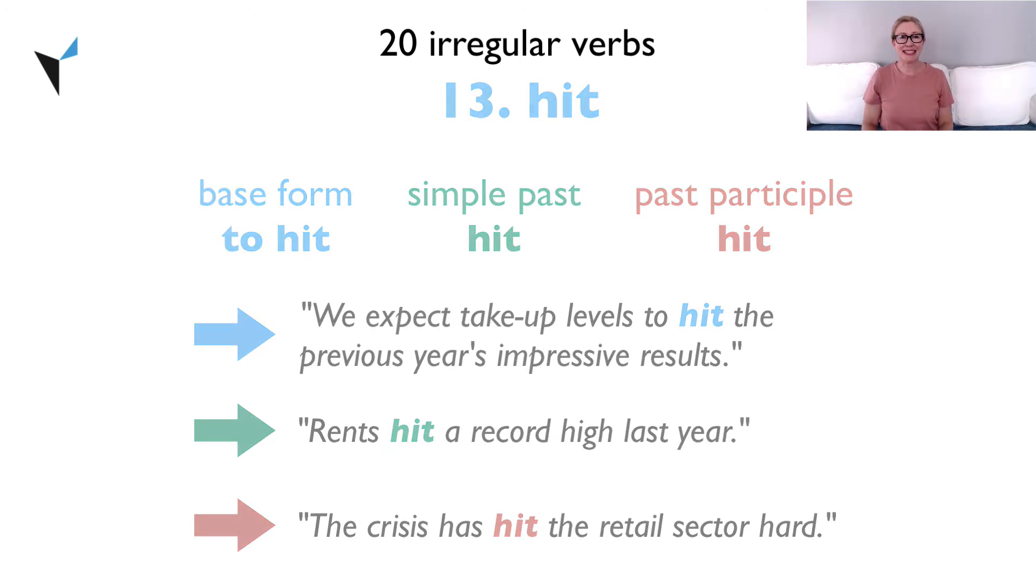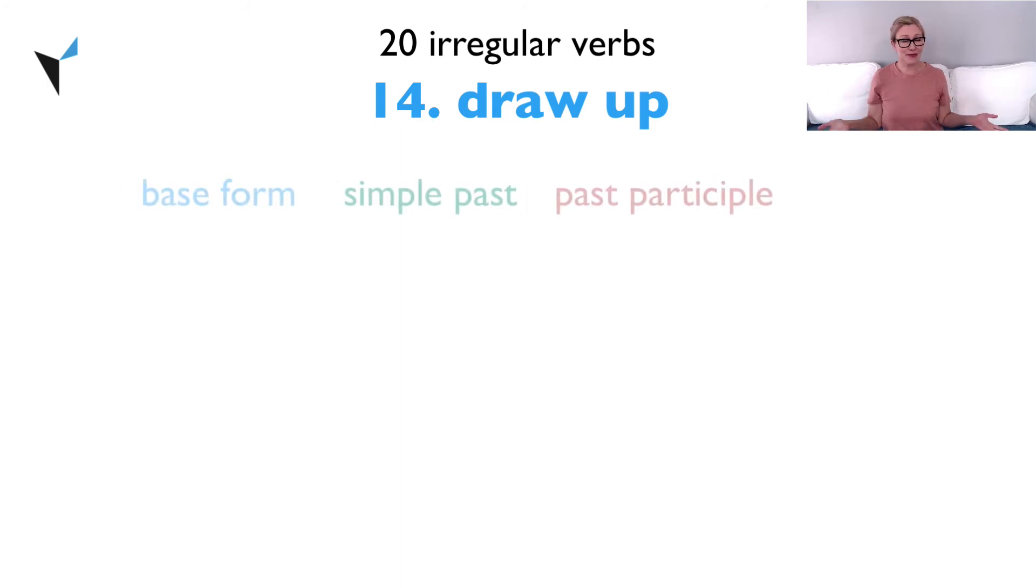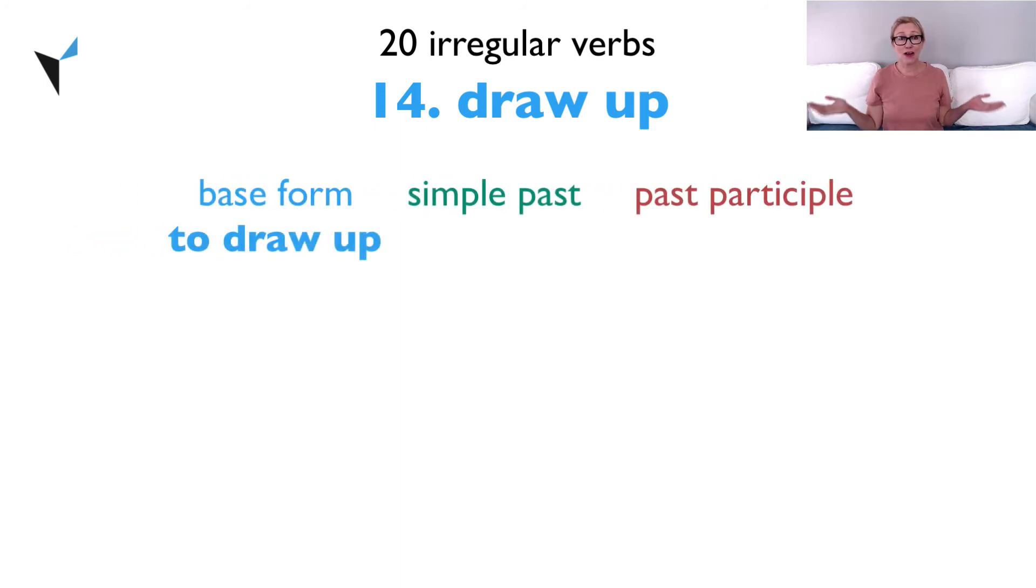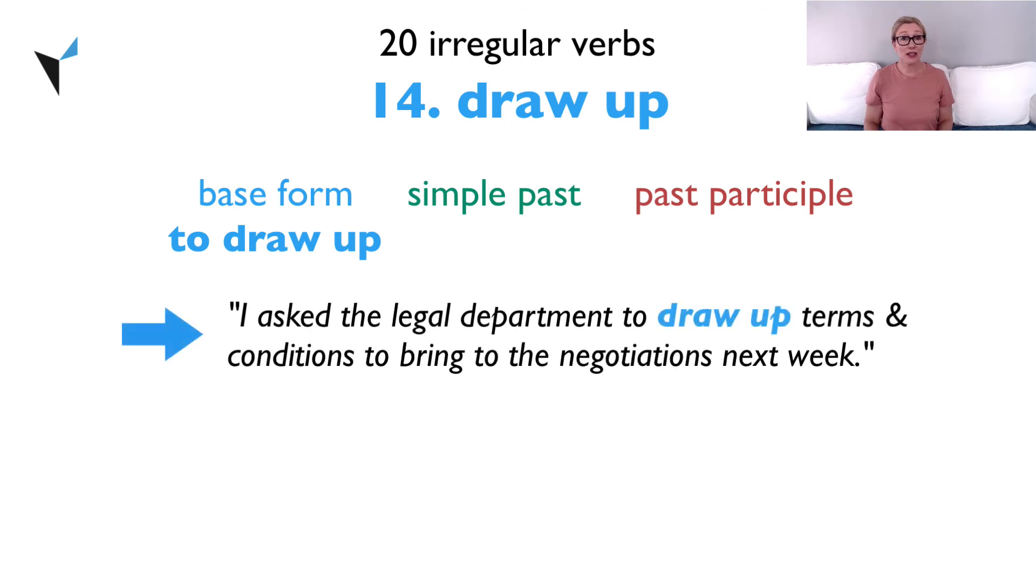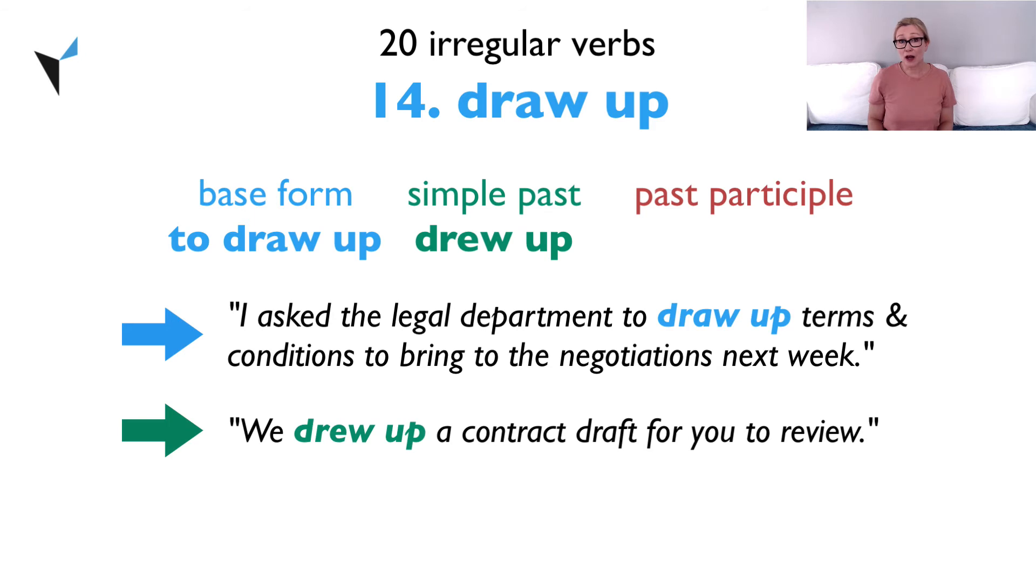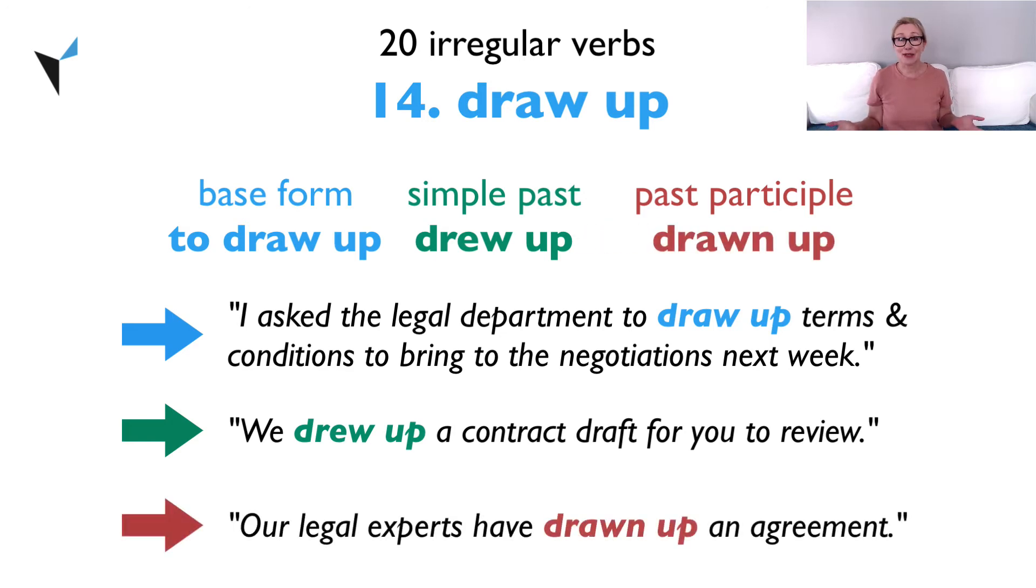Verb 14, draw up. The base form is to draw up. I asked the legal department to draw up terms and conditions to bring to the negotiations next week. The simple past is drew up. We drew up a contract draft for you to review. The past participle is drawn up. Our legal experts have drawn up an agreement.